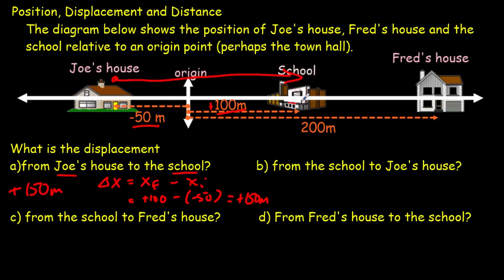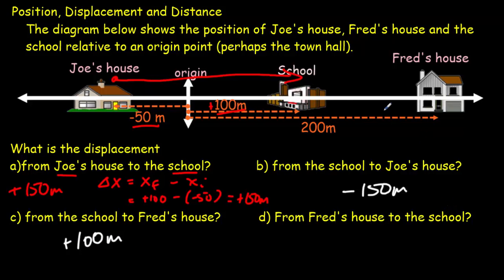From the school to Joe's house is negative 150 meters. From the school to Fred's house is 100 meters to the right, or plus 100 meters. And from Fred's house to the school, that would be minus 100 meters.